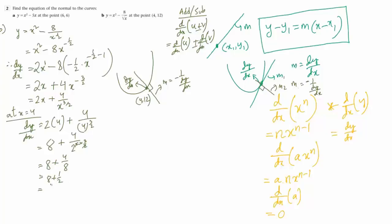So 8 plus half, 4 by 8 is half. So 8 and a half means 2 times 8 is 16 plus 1, which is 17 by 2. That is the gradient of the curve. Remember, the gradient of the normal is going to be not only the reciprocal but negative reciprocal. It would be minus 1 by 17 by 2, which is minus 2 by 17. That is the gradient of the normal.